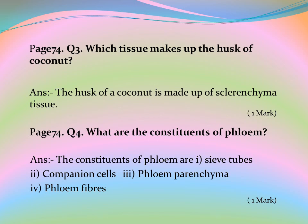Page 74, Question 3: Which tissue makes up the husk of coconut? Answer: The husk of a coconut is made up of sclerenchyma tissue.